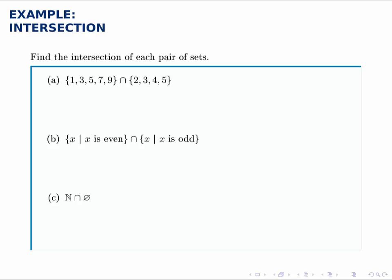So for the first example, if we look through this and pick out which elements appear in both, we notice there's a 3 in both of them and there's a 5 in both of them.